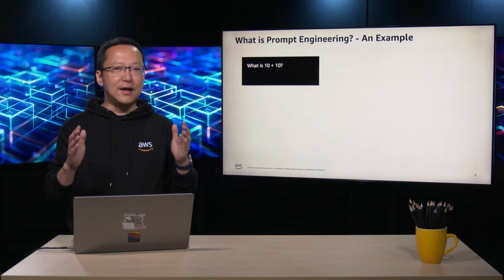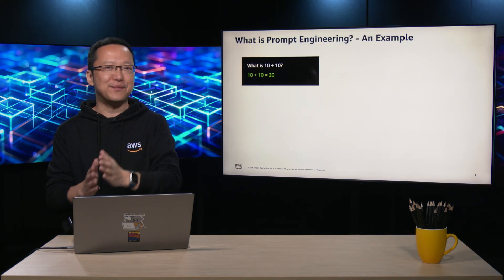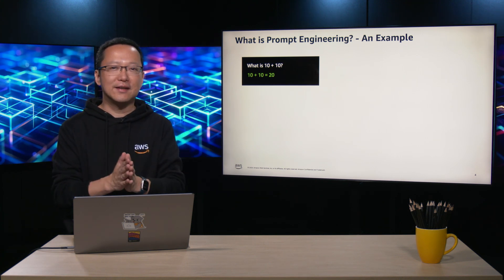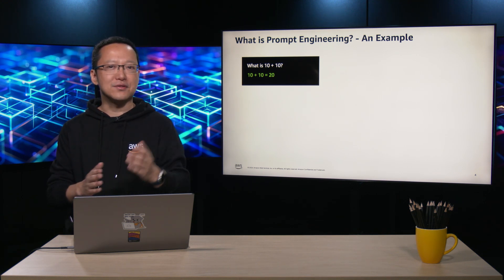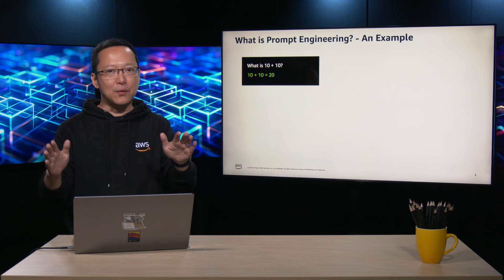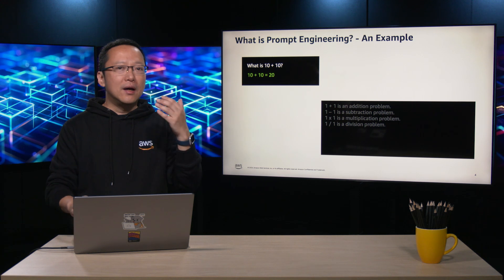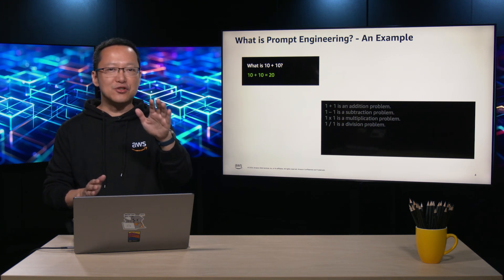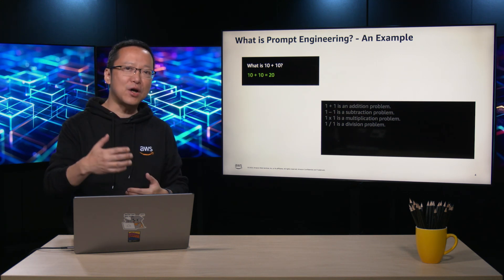What is prompt engineering? Imagine asking a large language model what is 10 plus 10. The likely response would be: 10 plus 10 equals 20. However, consider if you wanted a different correct answer. The question is ambiguous — it doesn't directly ask to solve the math problem.